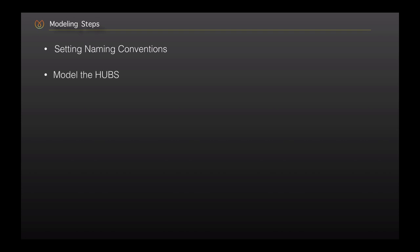The second step is modeling the hubs. This requires an understanding of the business keys and their usage across the business. After establishing the business keys and hash keys, we will create the hub tables. Then the next step is modeling the links. It starts with establishing the relationships between the business keys, hash keys, and hence the creation of the link tables.